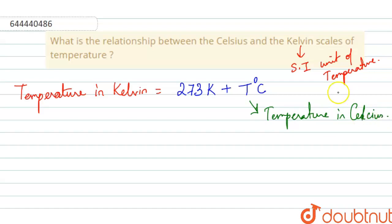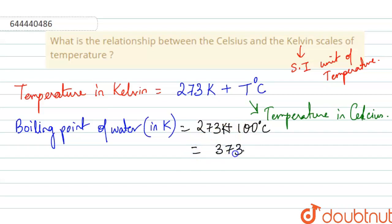Suppose you are told to find the Kelvin value of boiling point of water. So, in Kelvin, the boiling point of water is equal to 273 plus 100 degree centigrade. That is the boiling point of water in Celsius. This will give us 373 K.